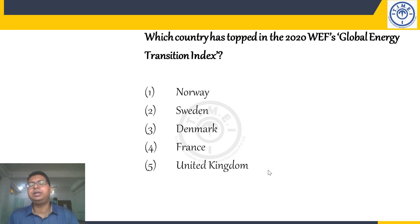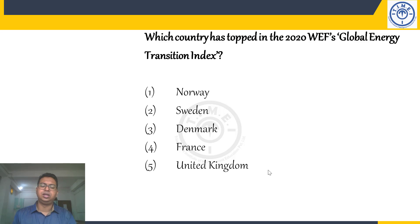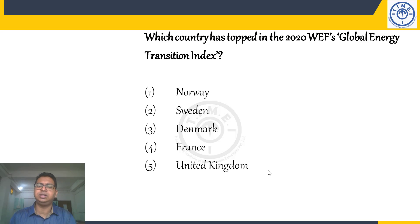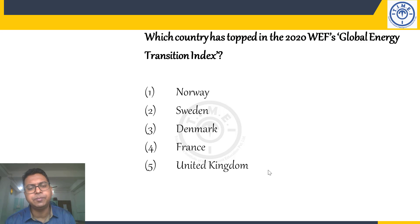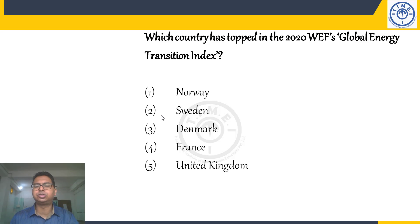Which country topped the 2020 World Economic Forum's Global Energy Transition Index? The index is based on economic development, environmental sustainability, and energy security parameters. The answer is Sweden, followed by Switzerland and Finland. India's position in this index is 74th — a slight improvement from the last rating. The World Economic Forum's head office is in Geneva, Switzerland.